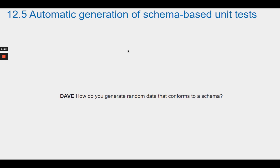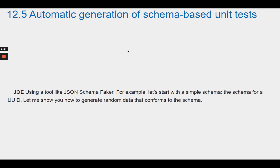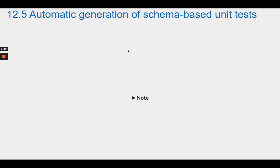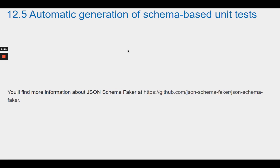Dave asks how you generate random data that conforms to a schema. Joe says you use a tool like JSON Schema Faker. For example, let's start with a simple schema — the schema for a UUID — and show how to generate random data that conforms to it. More information about JSON Schema Faker is available at github.com/json-schema-faker/json-schema-faker.